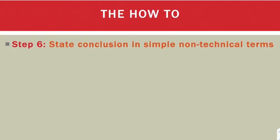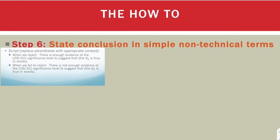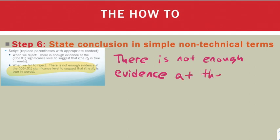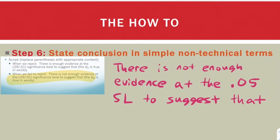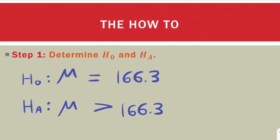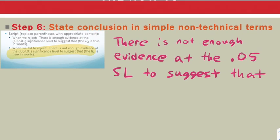And finally, we need to write this out in non-technical terms. Remember the script we learned in the last lesson. Since we fail to reject, we're going to do the bottom part. There's not enough evidence at the, and our significance level is 0.05. We can abbreviate significance level SL to suggest that. And now we just need to figure out what our alternative hypothesis in words would be. The alternative hypothesis was that the average weight of a man is greater than 166.3.